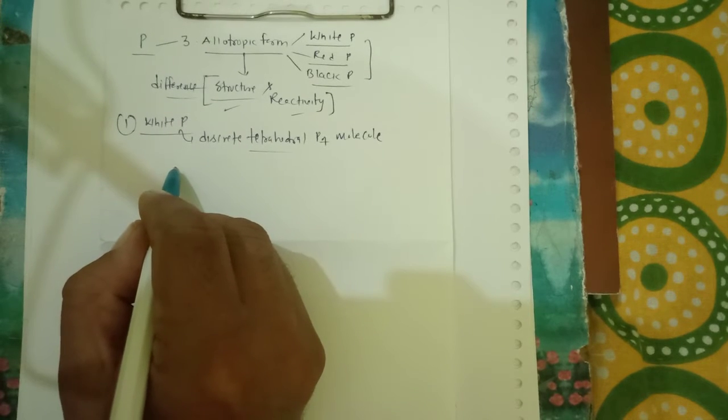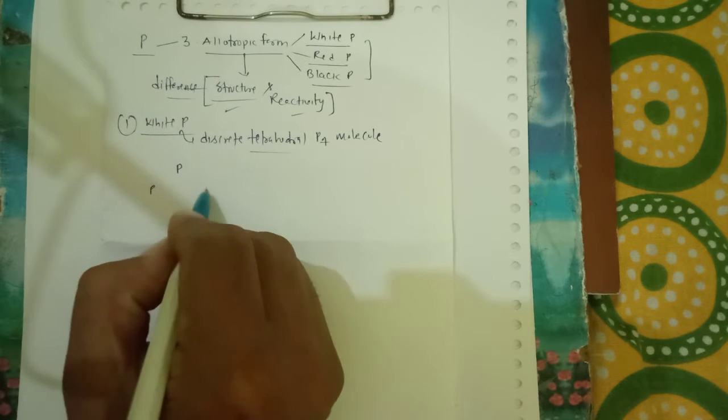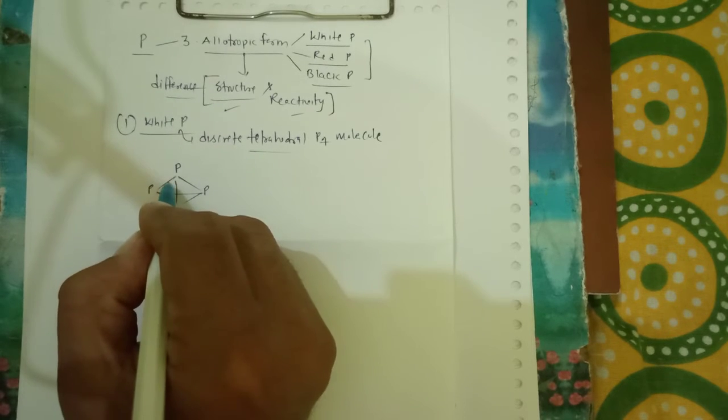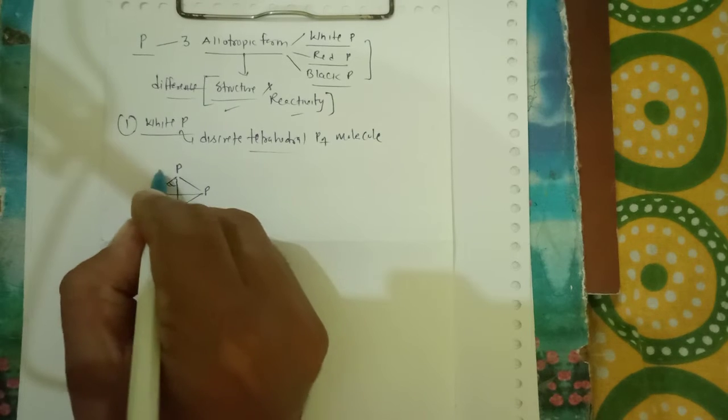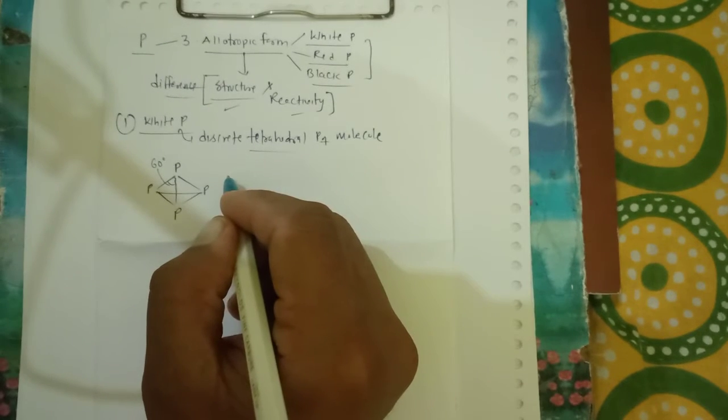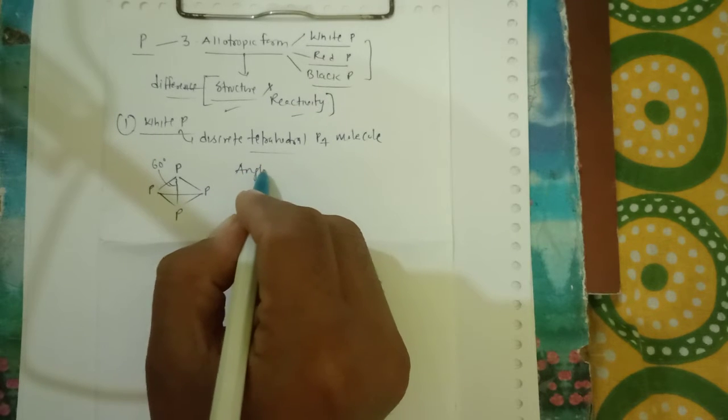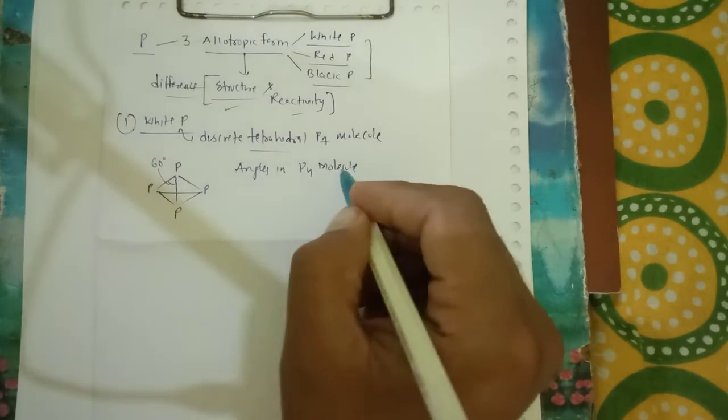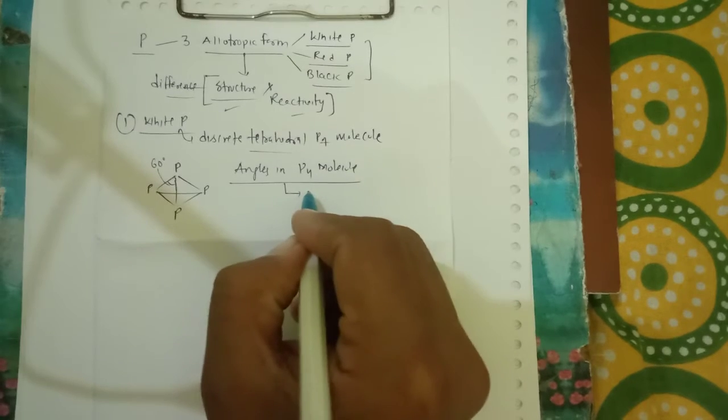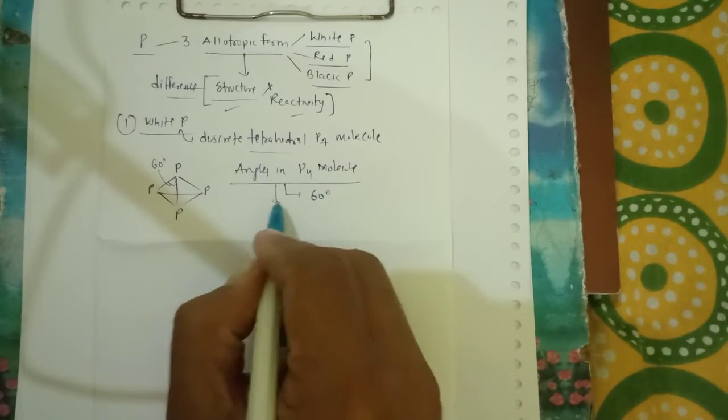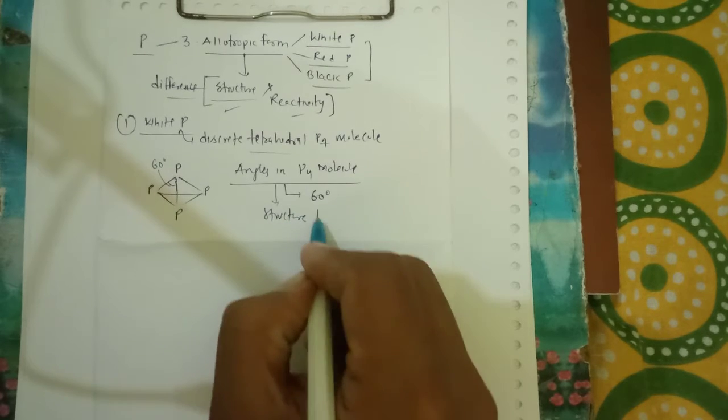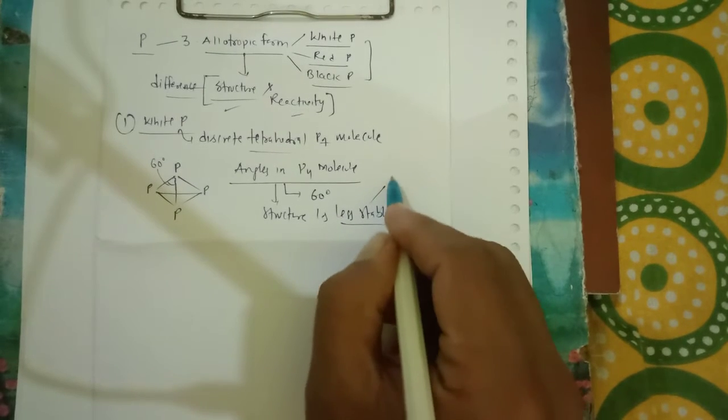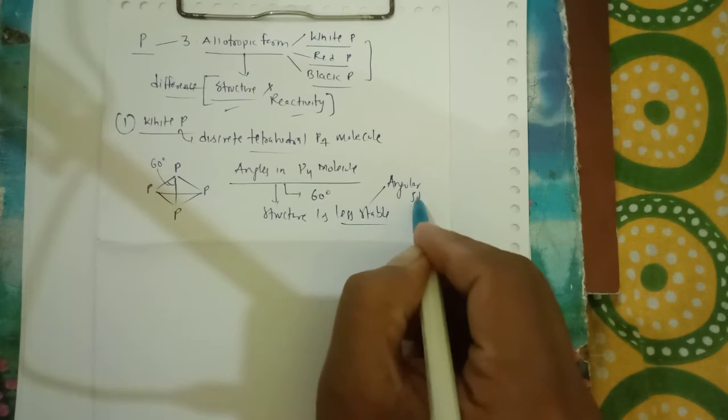Let us show the arrangement of four phosphorous atoms, and the angle between these two lines is considered to be 60 degrees. Here angles... So the structure is less stable because of angular strain.